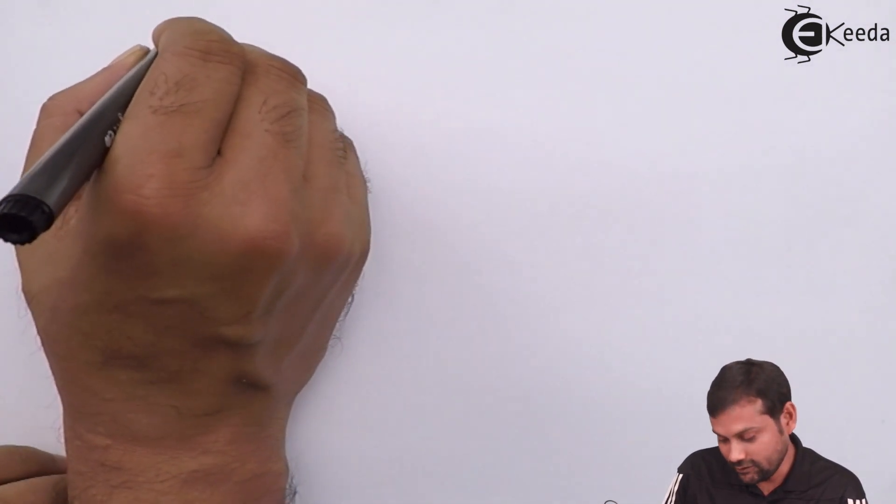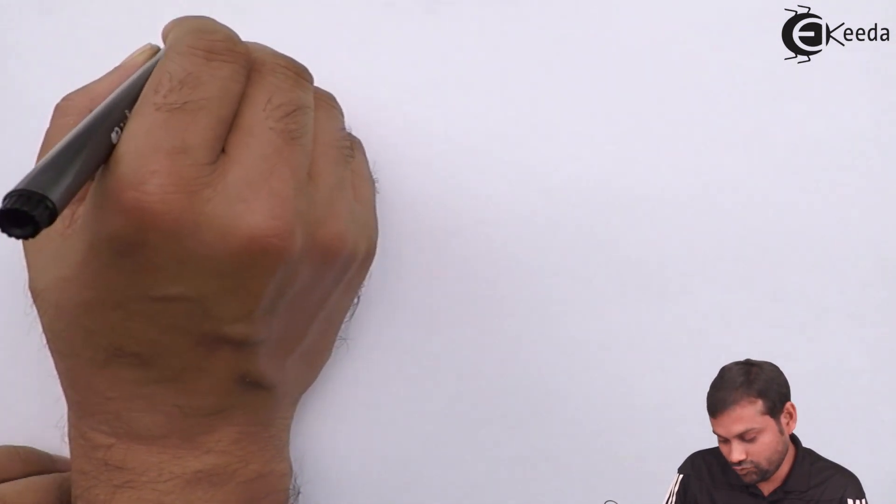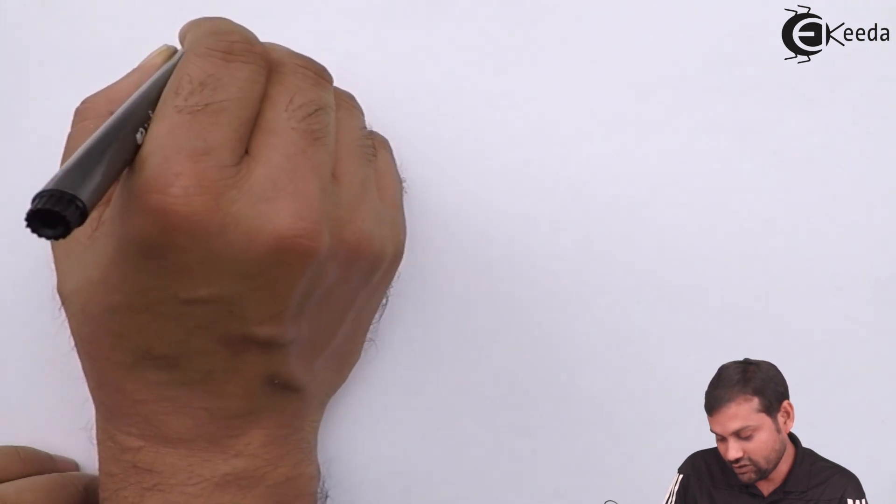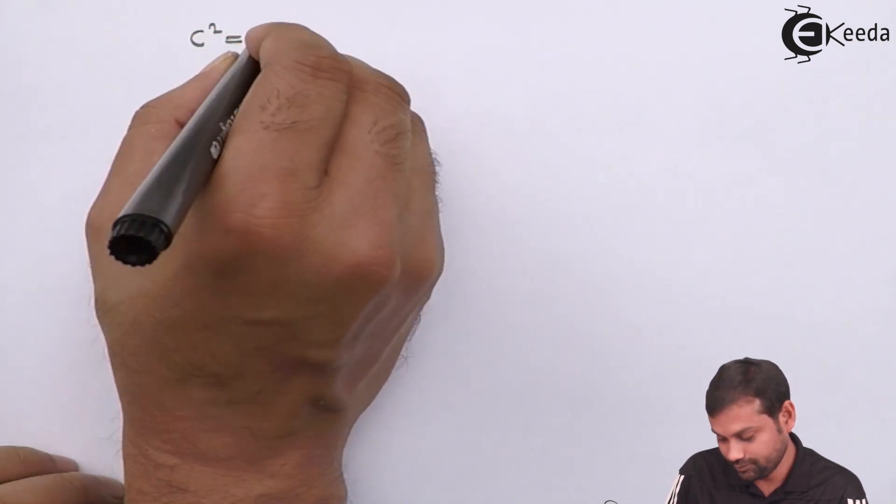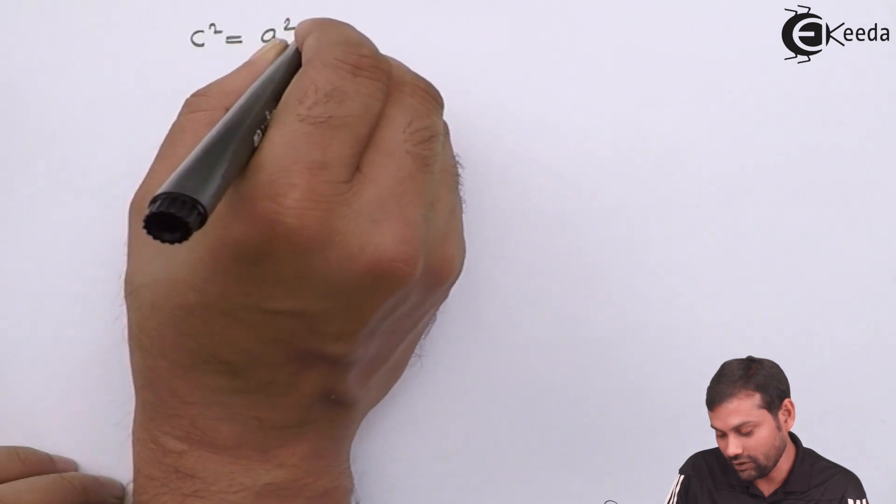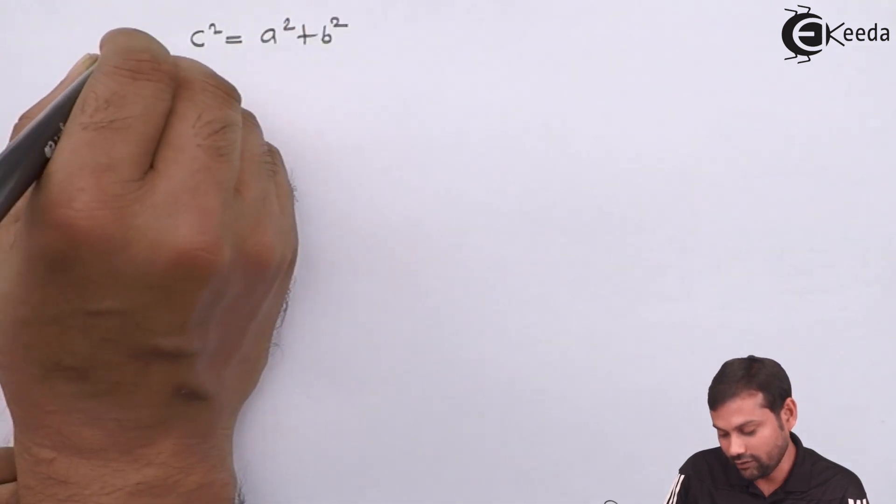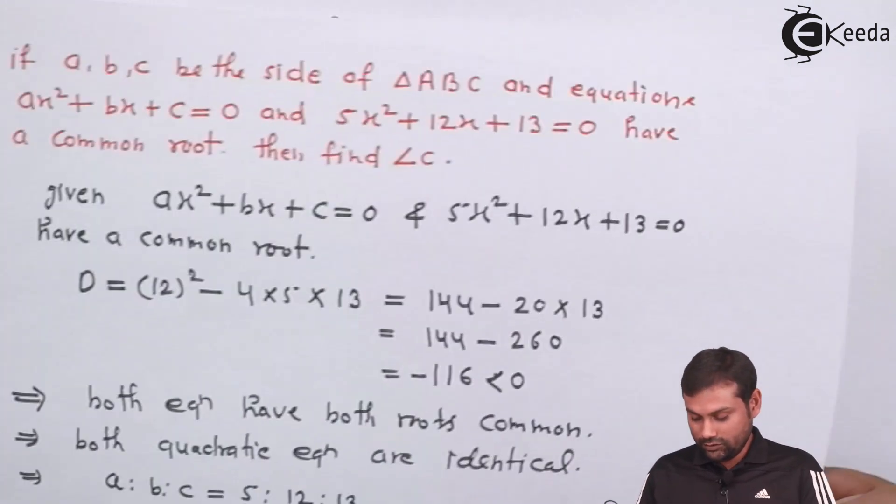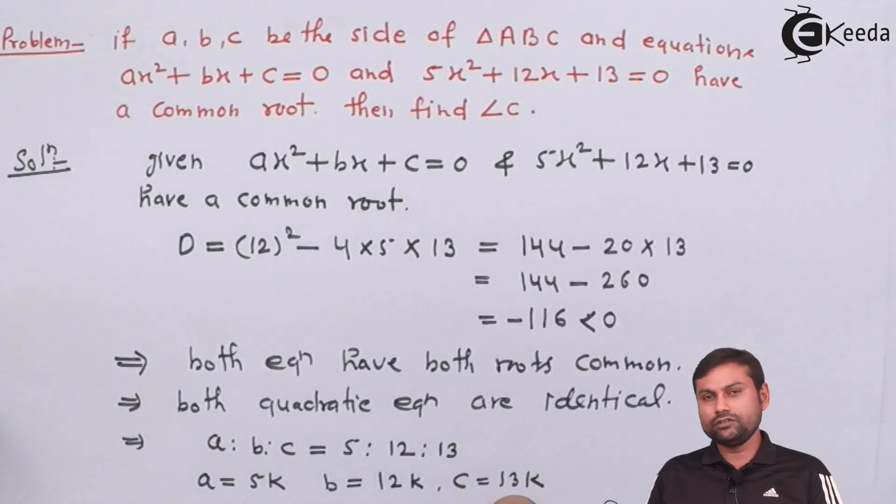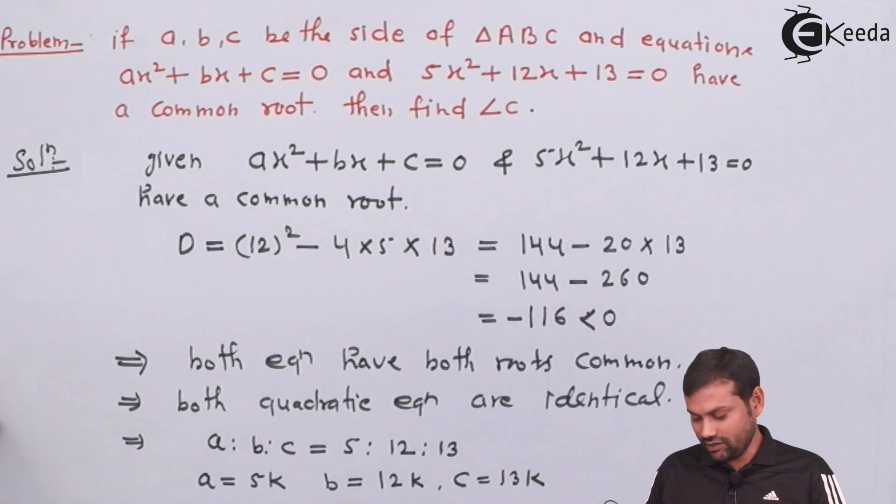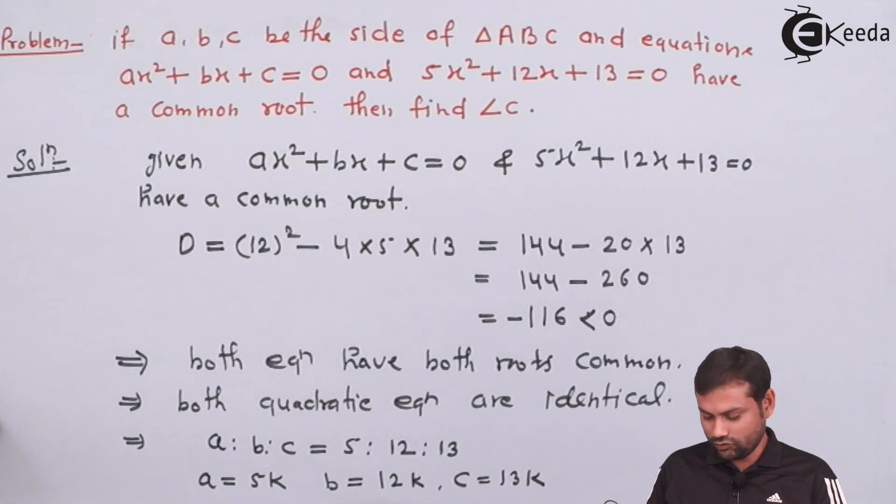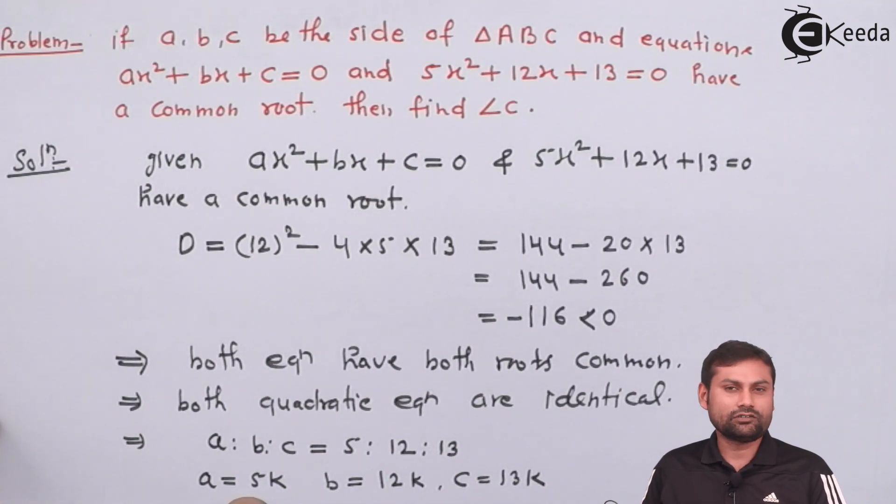We have seen here. Here, we have seen that. C square is equal to A square plus B square. Because, see, 13K square is 169K square. 12 square is 144K square and 25K square.